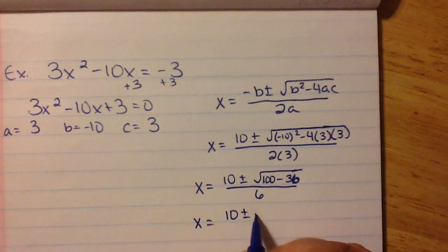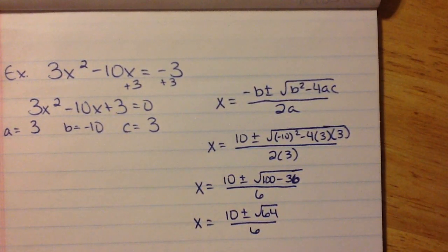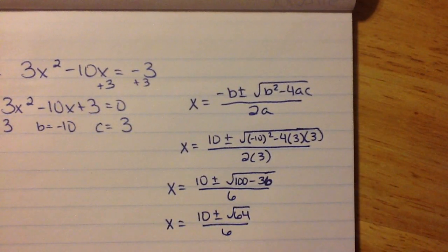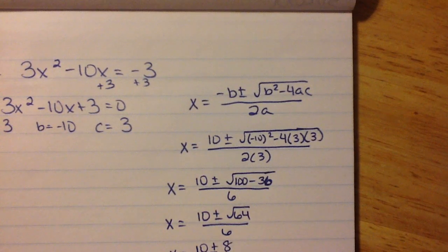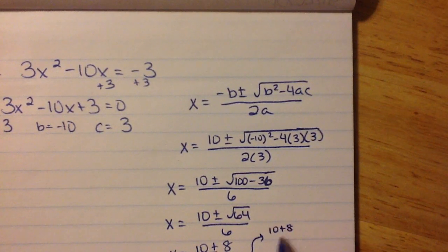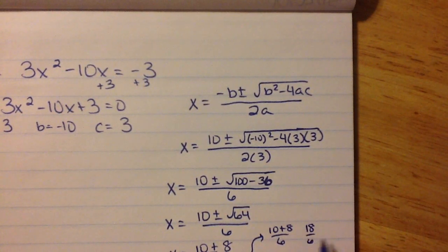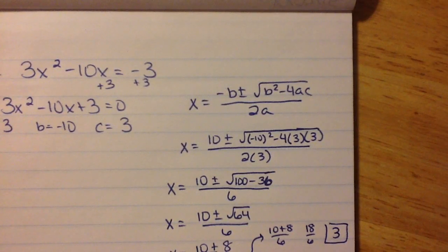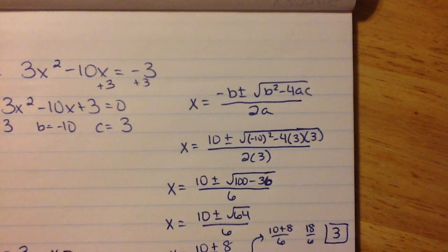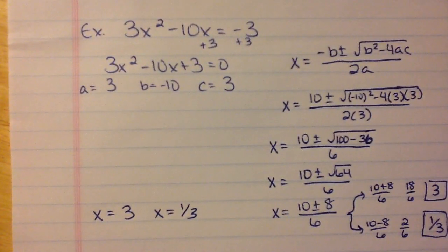So 10 plus or minus — if I subtract that, I get 64 divided by 6. Now we take our square root: the square root of 64 is 8. Because of the plus or minus, we're going to have 10 plus 8 divided by 6, and also 10 minus 8 divided by 6. So 10 plus 8 is 18 divided by 6, giving us x equals 3. And 10 minus 8 is 2 divided by 6, giving us x equals 1 third. So our x values are x equals 3 and x equals 1 third.